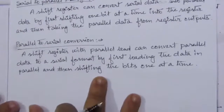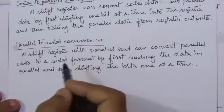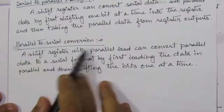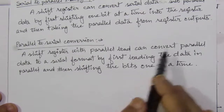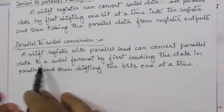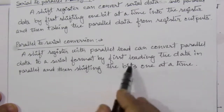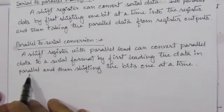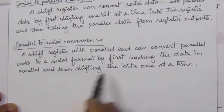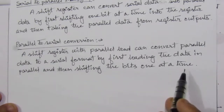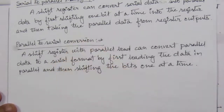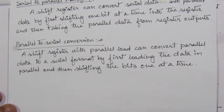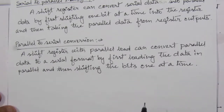For parallel-to-serial conversion, we use a shift register with parallel load, which converts parallel data to serial format by first loading all data in parallel and then shifting out one bit at a time. This is the reverse of the previous case — first load the data, then take one bit at a time as the serial output.